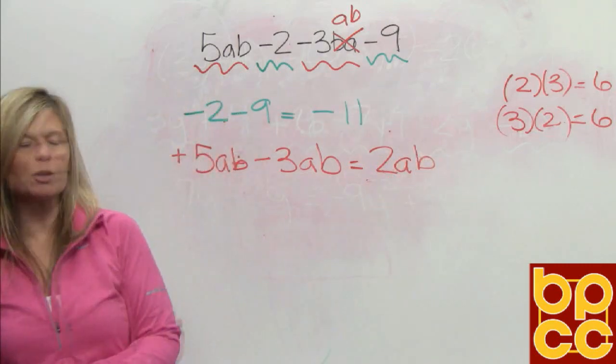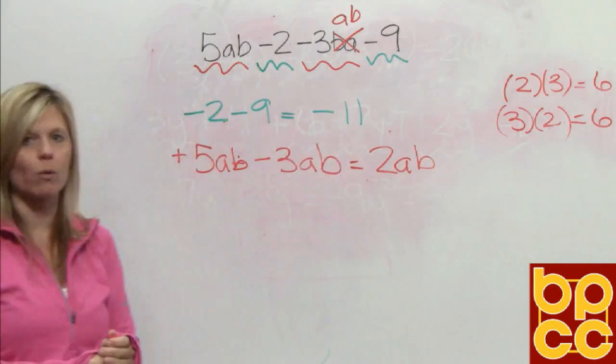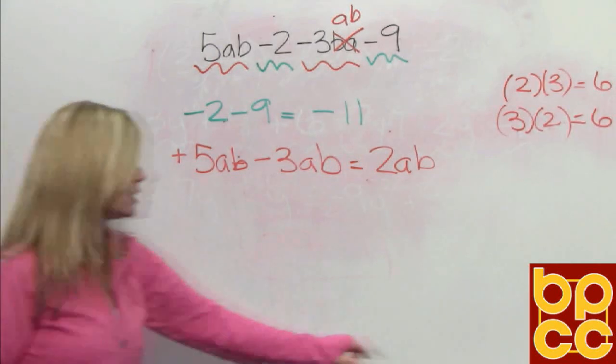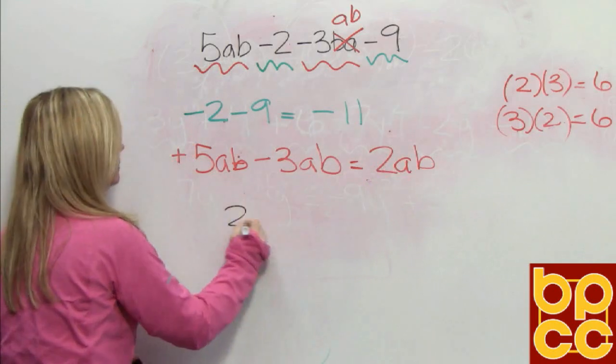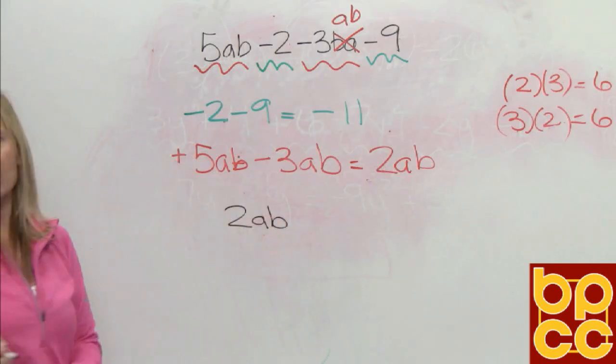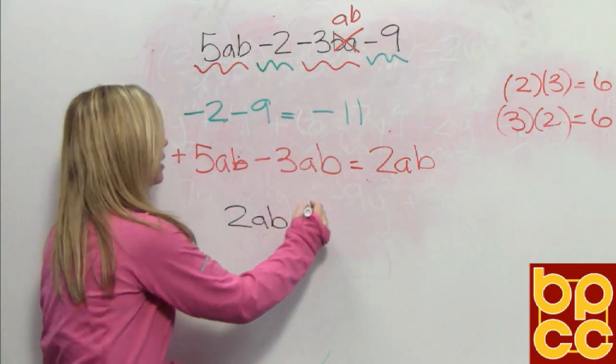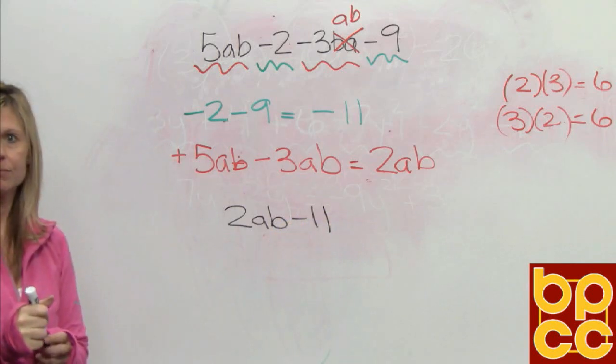Now all we've got to do is put these terms in the correct order when we write our answer. Remember, we have to be in descending order. So we always put our variables first, 2ab, and the last thing we write is our constant, negative 11.